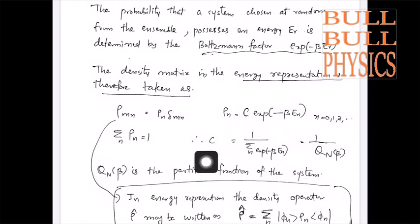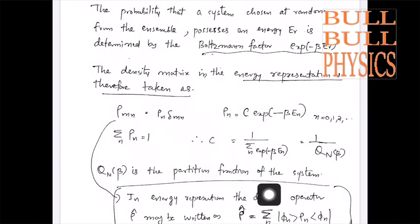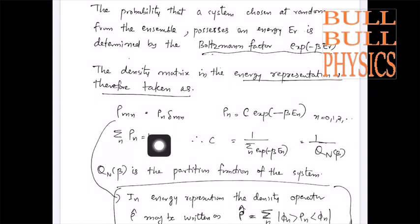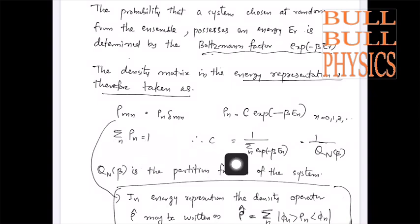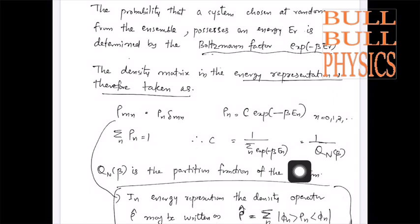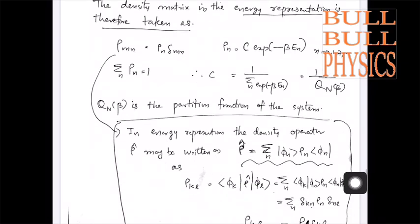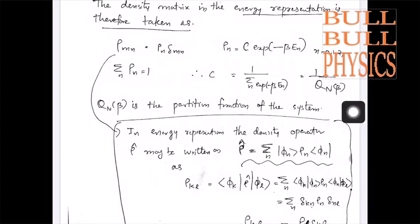This constant C can be easily determined. We know the total probability, or if you take the trace of the matrix, it should be equal to 1. So Σ_n ρ_n = 1, so C = 1 over Σ_n exp(-β E_n), which is 1 over Q_N(β). So Q_N(β) is the partition function of the system.